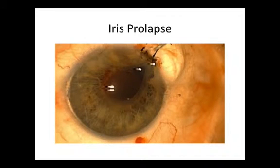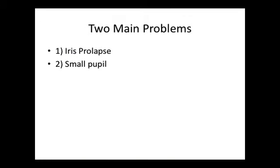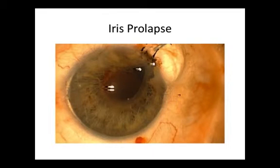In this case, after enlargement of the corneal section to facilitate removal of an IOL broken during the insertion process, iris prolapse has occurred. There are now two main problems: the iris is prolapsing, and the pupil is so small it is going to create difficulties for both the introduction and further positioning of the toric intraocular lens implant.